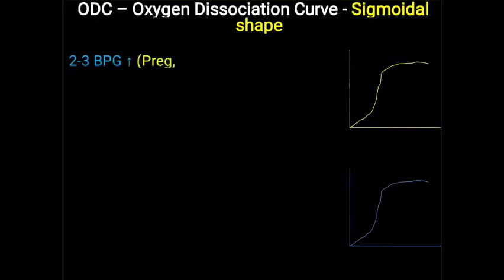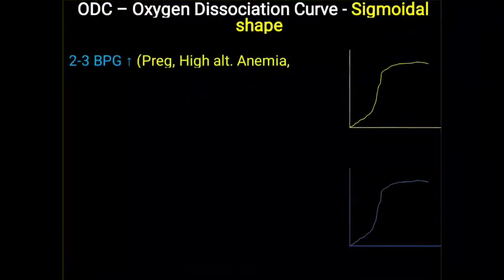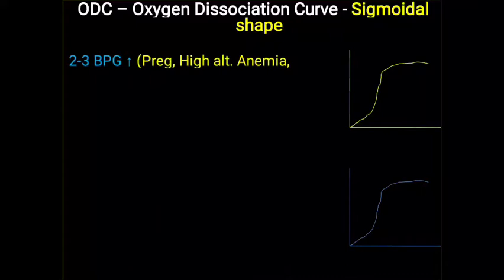You have to remember that the ODC for hemoglobin shows a sigmoidal shape, but it can shift to the right side or left side depending on the delivery of oxygen or the affinity of hemoglobin towards oxygen. The most important factor is 2,3-bisphosphoglycerate (2,3-BPG), whose level is increased during pregnancy, high altitude, and anemia.